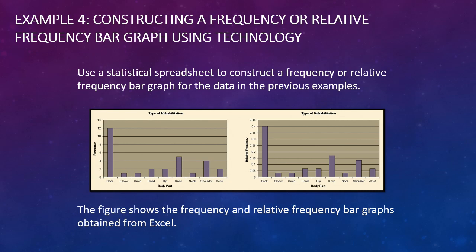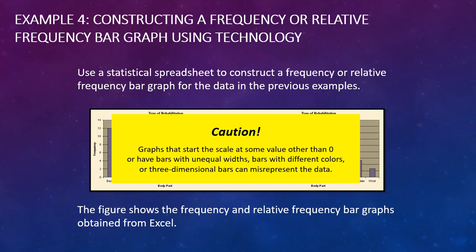It is important to be careful, because graphs that start at a value other than zero, or have bars with unequal widths, different colors, or three-dimensional bars can misrepresent data. For example, if a percentage is 40% but the axis doesn't start at zero, you don't have a full reference from 0 to 100%. Make sure the bars are the same width. If bars are multiple colors or don't start at zero, spend more thoughtful time analyzing it — the inferences we get from visual data may not be so clear cut.